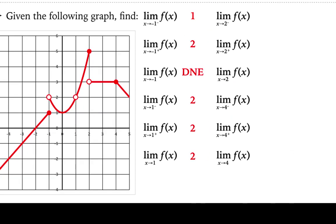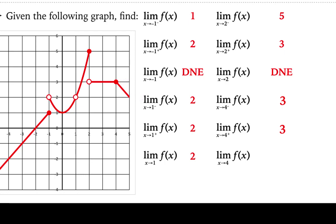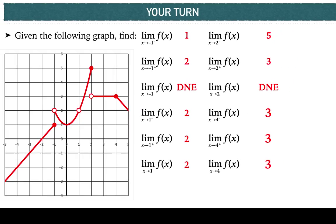Now let's look at x equals 2. As I approach from the left, the y values approach 5, and from the right, they approach 3. Since the y values are approaching two different numbers, the limit does not exist as x approaches 2. Now at x equals 4: approaching from the left, y values approach 3, and from the right, y values still approach 3. The limit does exist and equals 3.